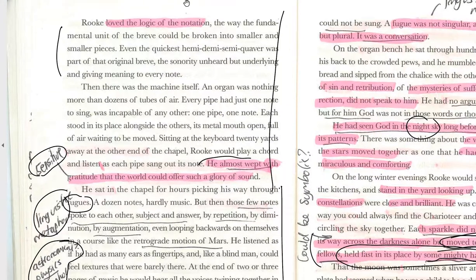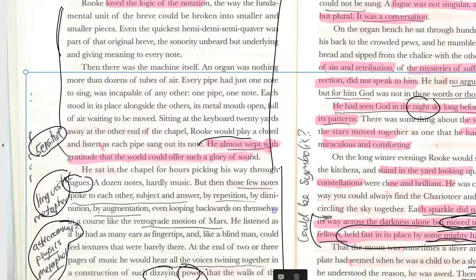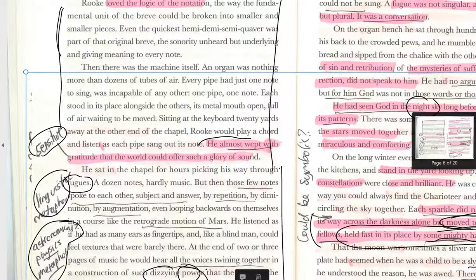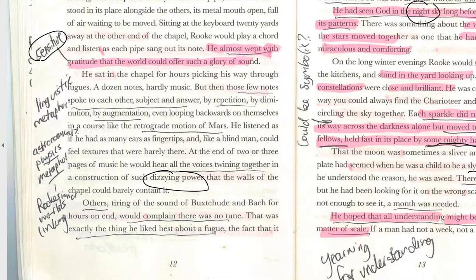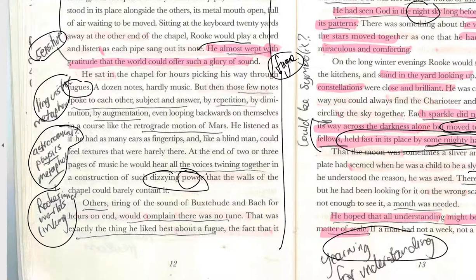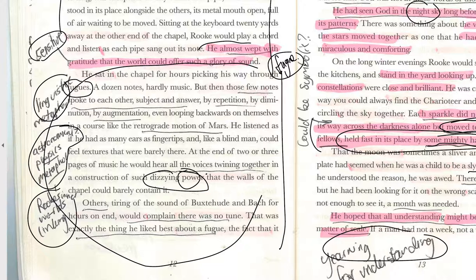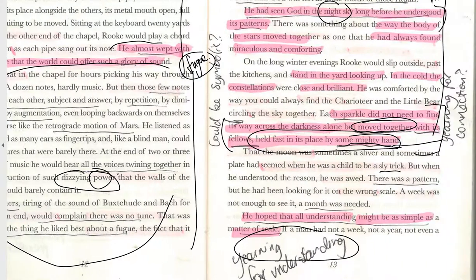Rook loves the organ and would sit in the chapel playing for hours. There's a great metaphor at the bottom of page 12 around his love of the fugue. It combines a linguistic metaphor, a music metaphor and an astronomical metaphor — all of Rook's interests melted together. A fugue doesn't really have a single melody; sounds blend together and it's described as a bit like a conversation.